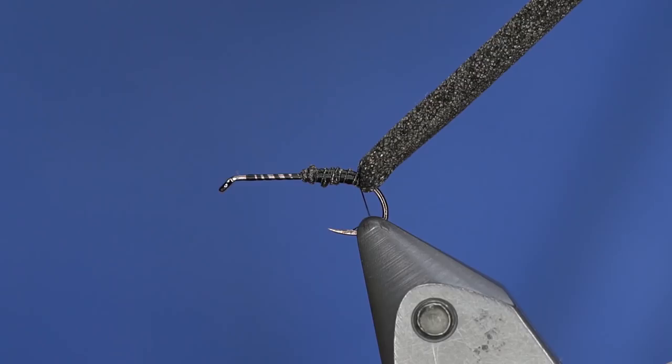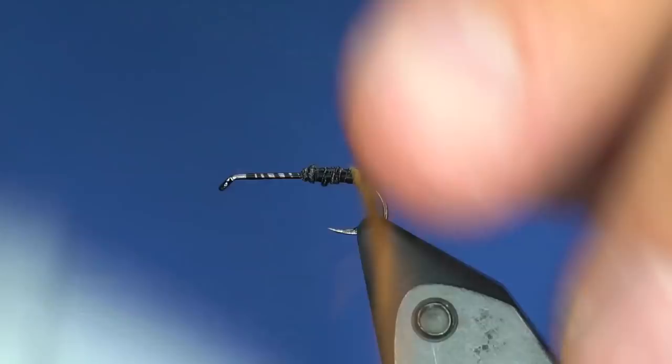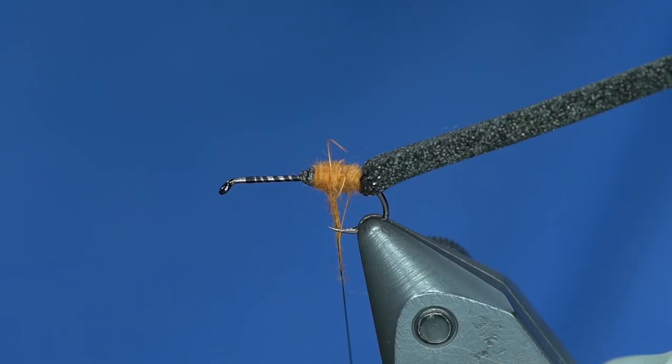I got Whiting rusty dun in my brain right now because it's an awesome color. And this stuff's cool, this is actually beaver dub that I'm using because it will spike out just a little bit. I'm getting kind of messy but the idea is I'm going to build up a ball of dubbing.